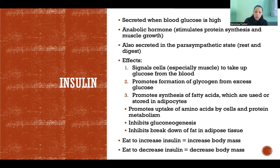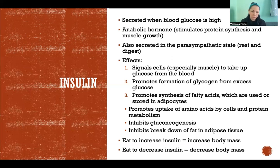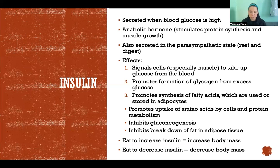Insulin signals cells — mostly muscle cells but other types too — to take up glucose from the blood. Insulin is the signal to those cells that it's time to eat, that glucose is available, and that the cell should take it up and use it for fuel. Once the cells are fed and there's still excess glucose in the blood, the next step is that insulin promotes the formation of glycogen from that excess glucose. Just as glucagon broke down glycogen to release glucose, insulin is what forms the glycogen in the first place — it takes extra glucose and forms glycogen, the stored form, which is stored in the liver and skeletal muscle.